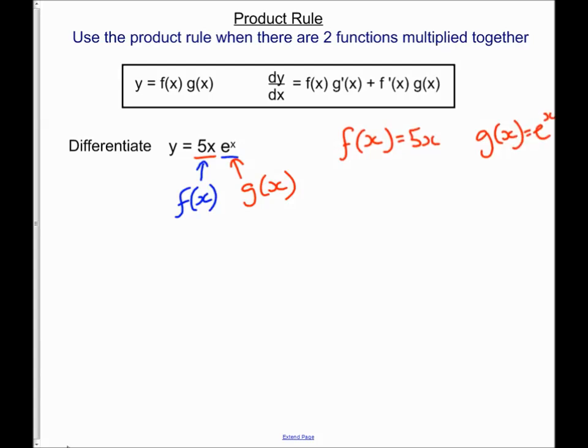Now I just need to differentiate them. I can say f dash of x equals 5 and g dash of x equals e to the x.